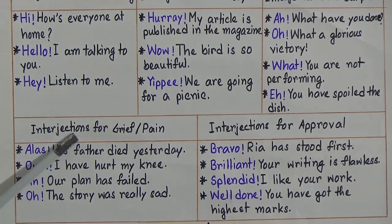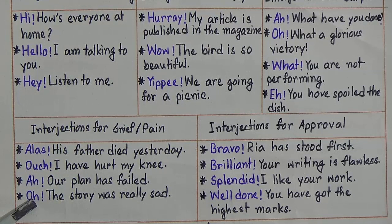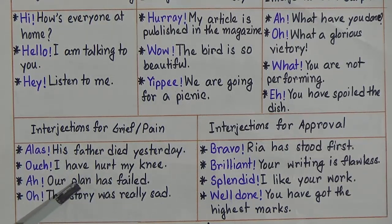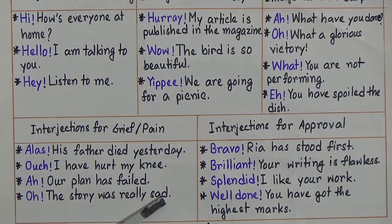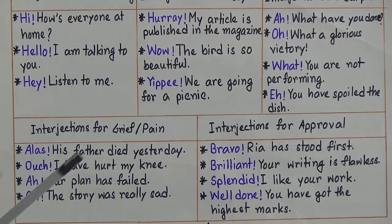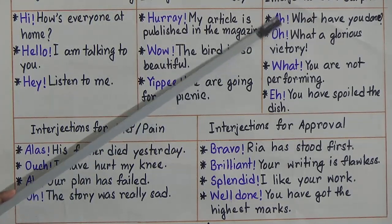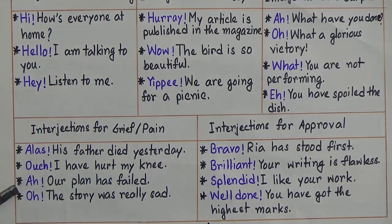Interjections for grief or pain are used to show our sadness or pain in an unfortunate event or situation. For example: Alas! His father died yesterday. Ouch! I have hurt my knee. Ah! Our plan has failed. Oh! The story was really sad. We use ah and oh in both situations — to express feelings of grief, pain, or sadness.